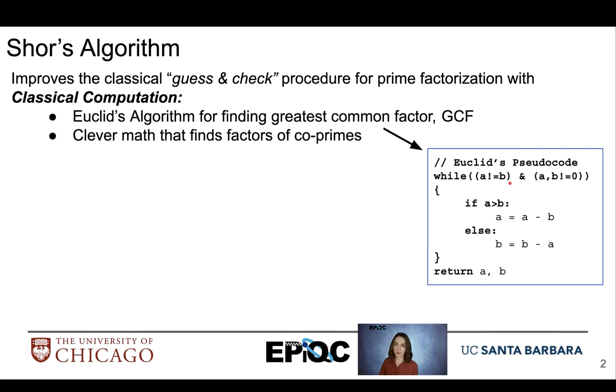So we first see which number is larger, A or B, and we subtract the smaller from the larger. We continue this procedure until A and B are equal, or either A or B is equal to 0. Then we know that we've found our greatest common factor.